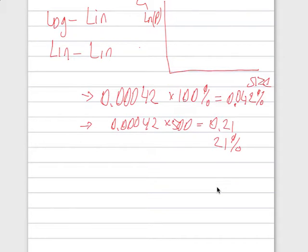The full interpretation is: on average, a 500 square foot increase in the size of the house will increase prices by 21%, holding everything else constant — ceteris paribus, or holding everything else constant. Other factors constant in the regression.